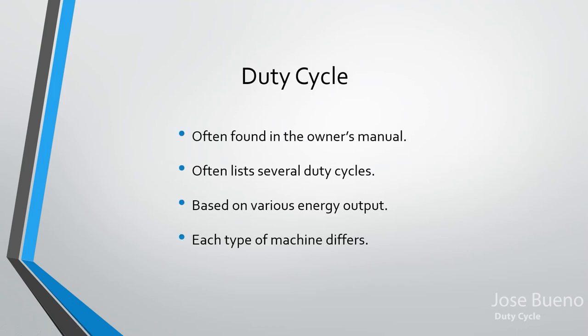Where do we find duty cycle? It isn't always labeled on the welding machine — over time, labels get scratched off, smudged, or dirty. The place where you can always look it up is in the owner's manual. If you've lost it, you can go to the manufacturer's website and look up the specific model. Every welding machine has multiple duty cycles, and each one varies based on how much power you're using.